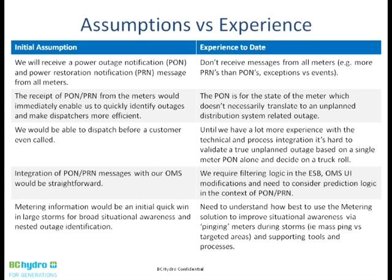Our second assumption was that we would quickly identify outages and make dispatchers more efficient. In reality, a PON tells us the state of the meter — that it has lost power — but doesn't necessarily translate into a distribution system problem requiring dispatch. In storms where cell towers have gone down, meters aren't communicating at all, which is a completely different issue outside our control. Local field offices liaise with those resources, but the smart metering solution can't add value until communications are restored.